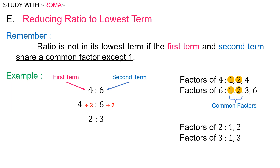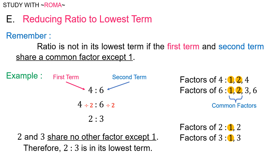The factors of two are one and two, and the factors of three are one and three. Two and three share no other factor except one. Therefore, two is to three is in its lowest term.